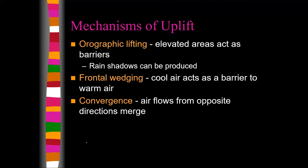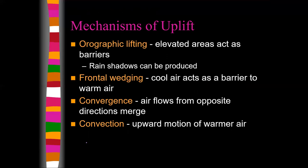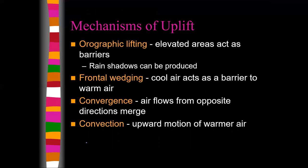We need mechanisms of uplift for weather to happen. There are four basic ways air can be uplifted. We've already seen orographic lifting — elevated areas act as barriers, and when air hits a mountain range, the only place it can go is up. Rain shadows can be produced on the other side as a result of adiabatic heating.